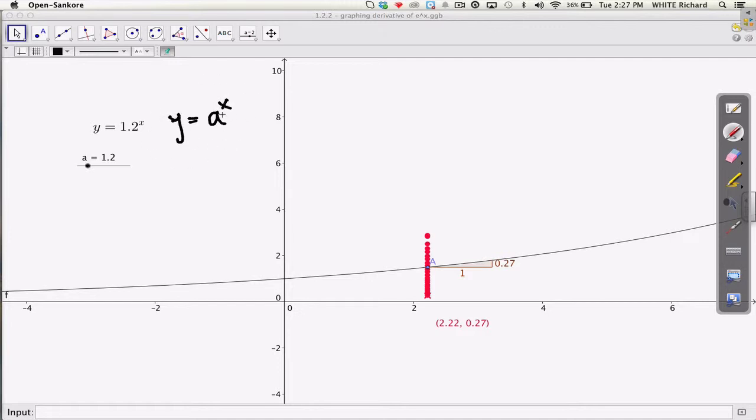And we're going to change the value of a and see what happens to the derivative. So what we have here is a is 1.2, and I actually have created a file that tells us what's going to happen.